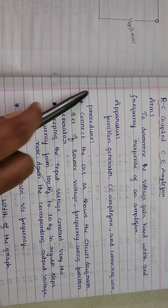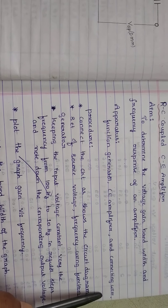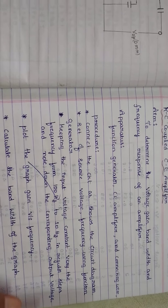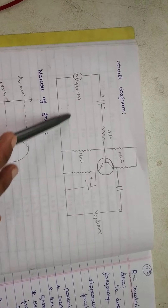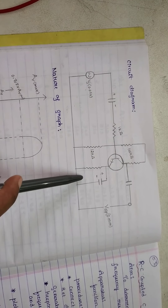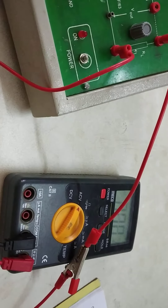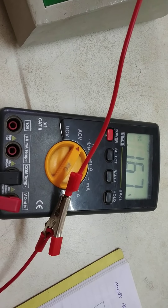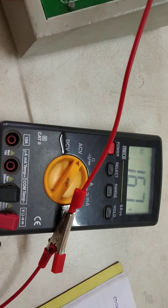The apparatus required are a function generator, CE amplifier, and connecting wires. The circuit diagram is shown in the figure. This is the function generator, this is the CE amplifier, and this is the multimeter.